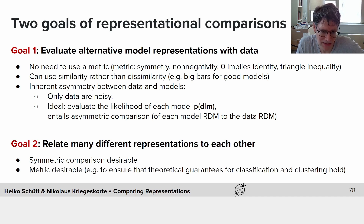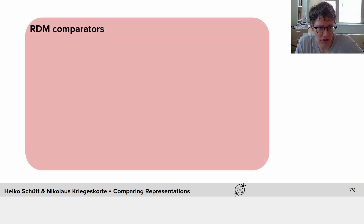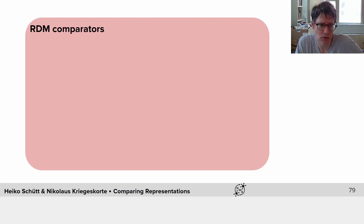In particular, a metric is desirable — for example, to ensure that theoretical guarantees for classification and clustering hold. In this tutorial, we're exploring goal two, where we want a symmetric comparison. So let's consider different symmetric RDM comparison functions that we can use to compare two RDMs. Each RDM characterizes the representational geometry of one representation. We can vectorize the two RDMs to get vectors d1 and d2, and we want some function c that compares the two symmetrically.